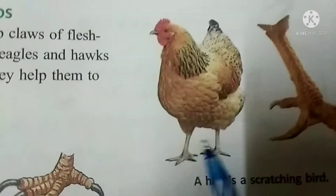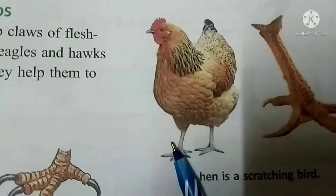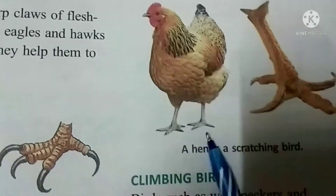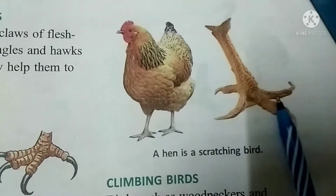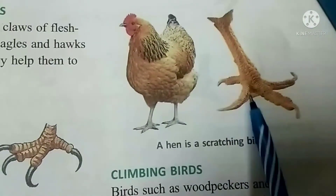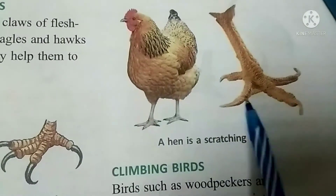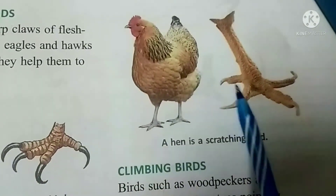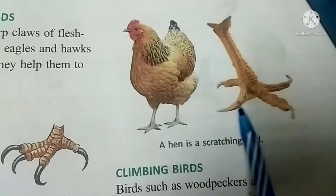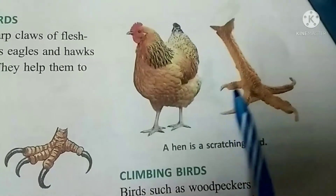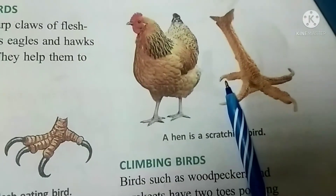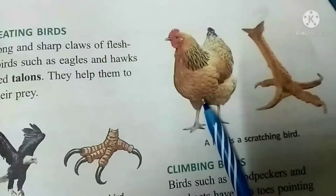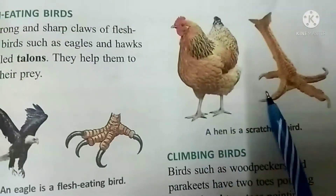Birds ke two feet hote hain, do pair hote hain aur four claws hote hain. Iske toe hote hain, aur yeh sabhi birds ke claws — panje — alag-alag tarah ke hote hain. Isliye birds ko alag-alag prakar mein baata gaya hai.